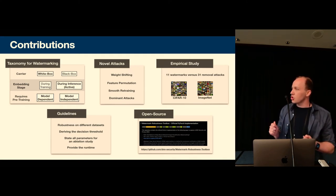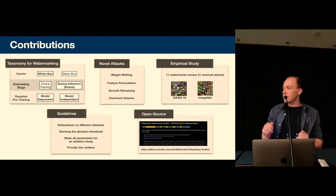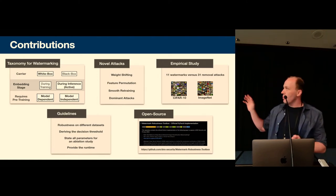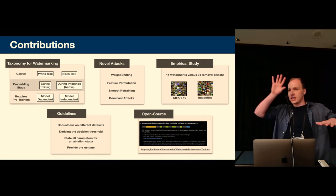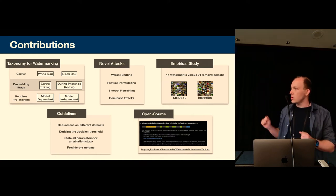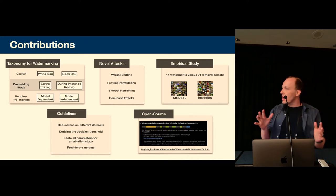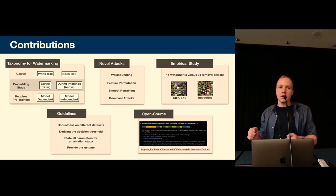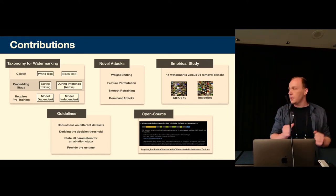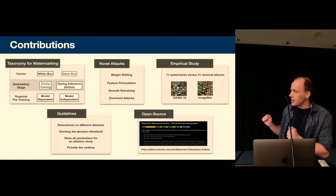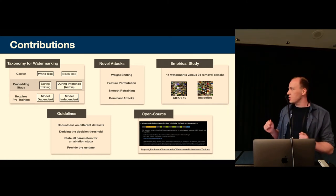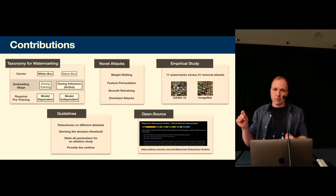Then we look at novel adaptive attacks against the subset of these watermarkers. And we have a large empirical study where we pit a lot of attacks against a lot of defenses on multiple data sets and we derive guidelines on how robustness evaluation can be improved in practice. And finally all of our source code is open source on GitHub and I will provide a link at the very end.